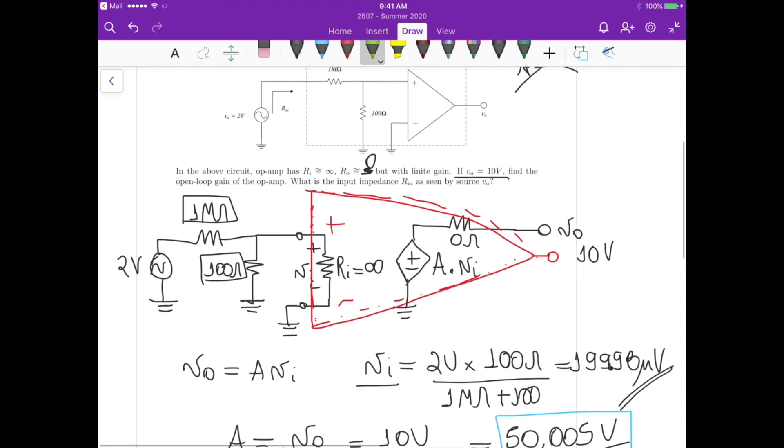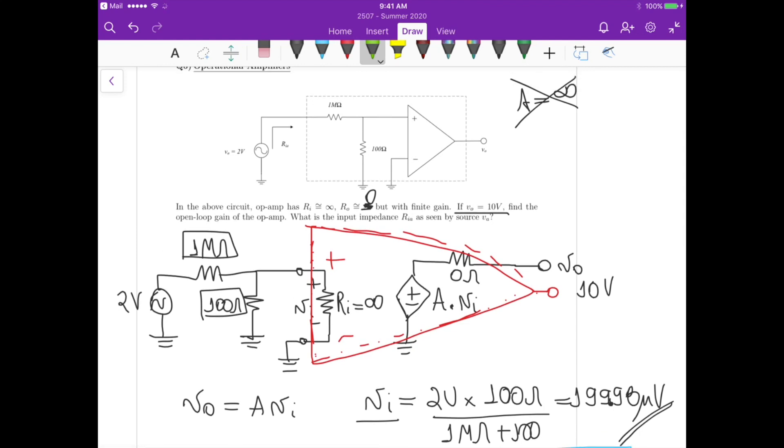So if you look at the circuit that I just redrew here, there's no current flowing here because this is close to infinite—so it's an open circuit. So all the current drained by the source or provided by the source flows in this direction here. It's a series path between the one mega ohm and 100 ohms.